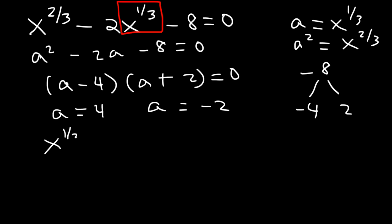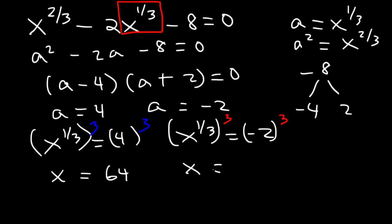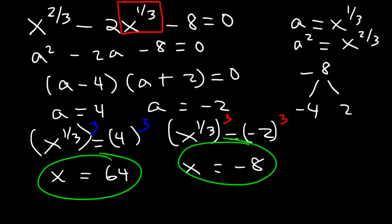So x to the 1 third — the cube root of x — equals 4 and negative 2. To solve for x, we raise both sides to the third power. On the left it's just x. 4 to the 3rd is 64. Negative 2 to the 3rd power is negative 2 times negative 2 times negative 2, which is negative 8. So the solutions are positive 64 and negative 8.